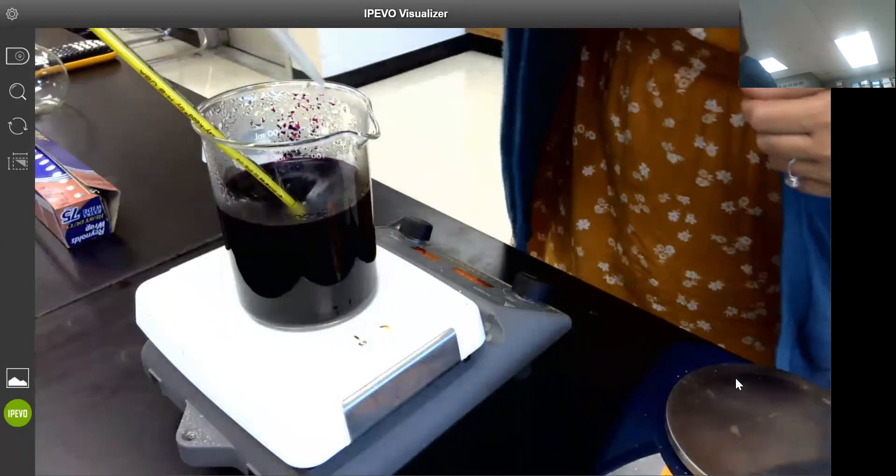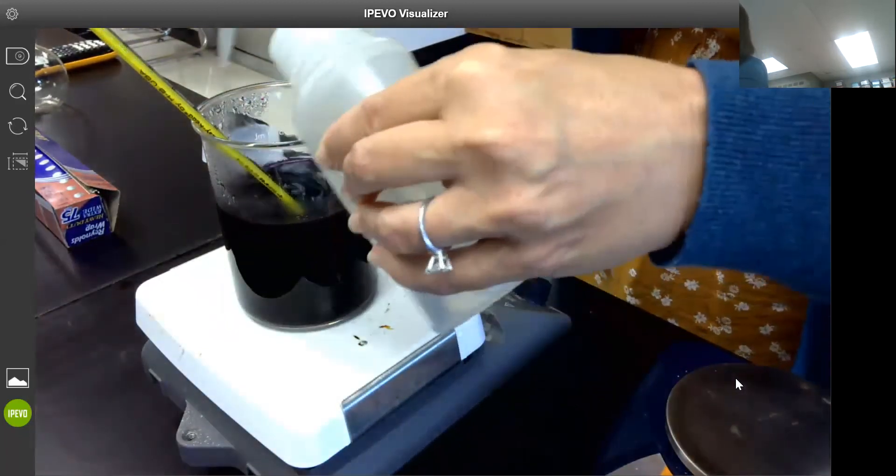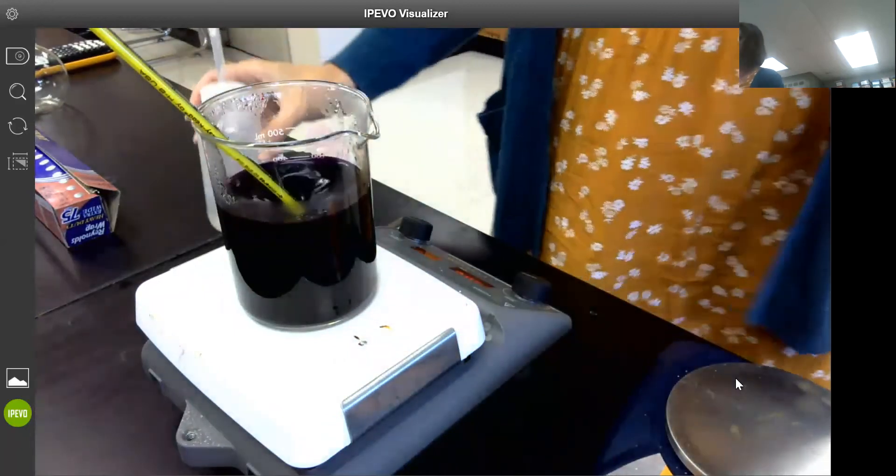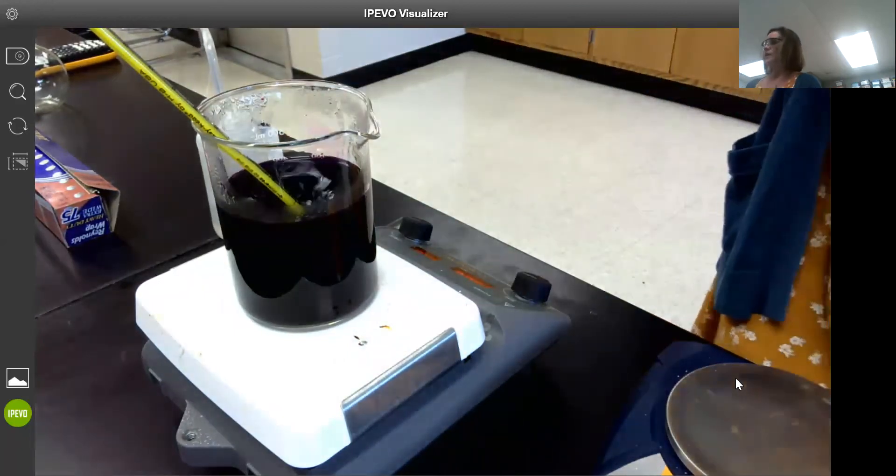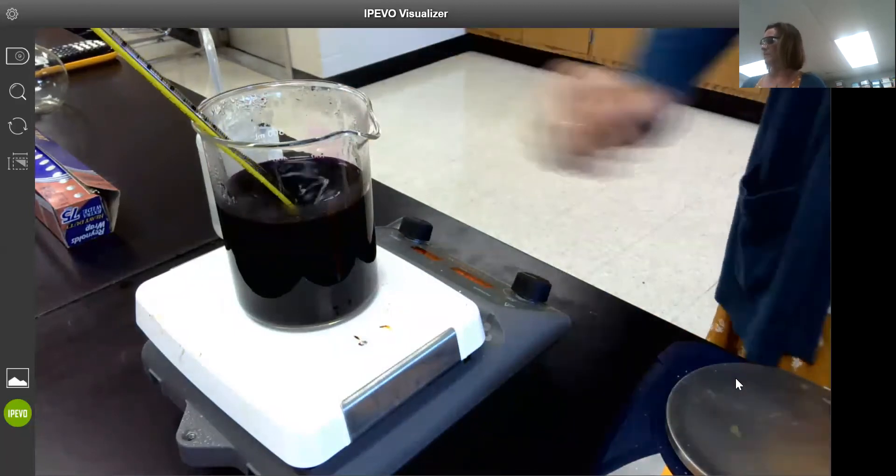I'm just going to spray down the sides to make sure all of the solid gets incorporated in there and dissolved. I also turned the heat way up so I want to get this all the way to 90 degrees with stirring.